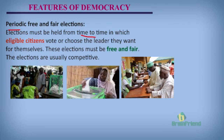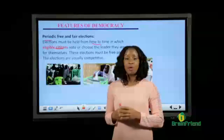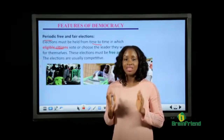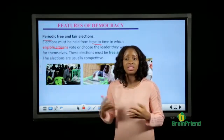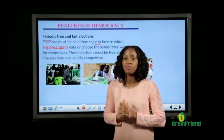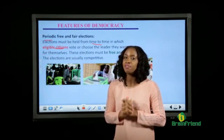For example, in Nigeria, we have a four-year interval before every election. In these elections, eligible citizens come out to vote or choose a leader for themselves. When we say eligible citizens, we mean people who are above the age of 18 years. These elections must be free and fair — that is, there will be no rigging or tampering of election results by anyone. If elections are not free and fair, it is not a feature of democracy.